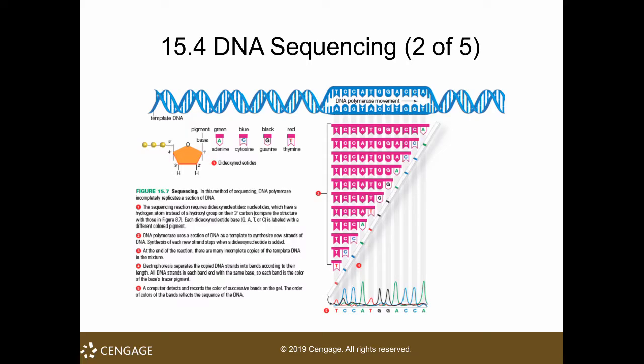Each dideoxynucleotide is tagged with a different color. As seen in this diagram, green for A, blue for C, black for G, and red for T. These are randomly incorporated into the sequence by the polymerase. Once the reaction cycle is completed, the mixture contains fragments of different sizes because they are randomly incorporated.